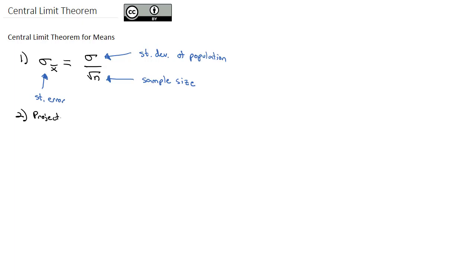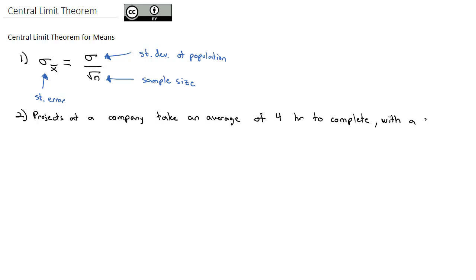Projects at a company take an average of four hours to complete, with a standard deviation of 1.2 hours. First, we're going to ask the question: what's the probability a project takes between 3.5 and 4.25 hours?